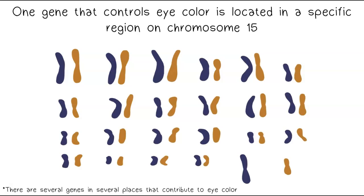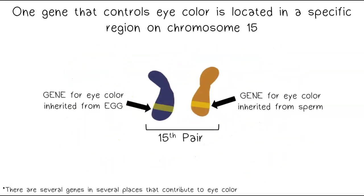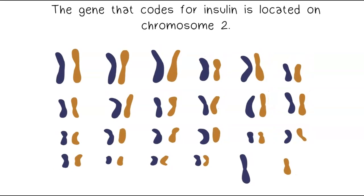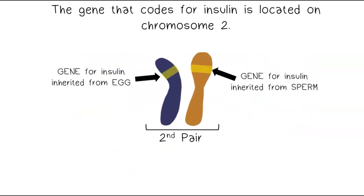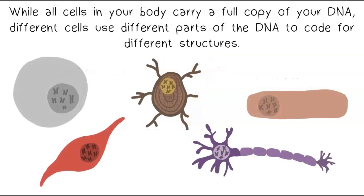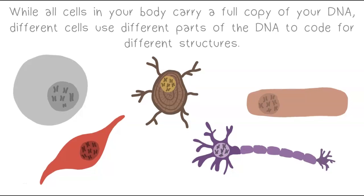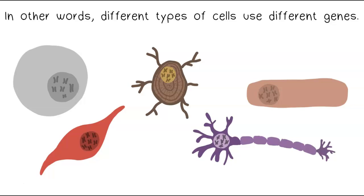For example, the gene that codes for eye color is located on chromosome 15, and the gene that codes for insulin is located on chromosome 11. While all cells in your body carry a full copy of your DNA, different cells use different parts of the DNA to code for different structures. In other words, different types of cells use different genes.